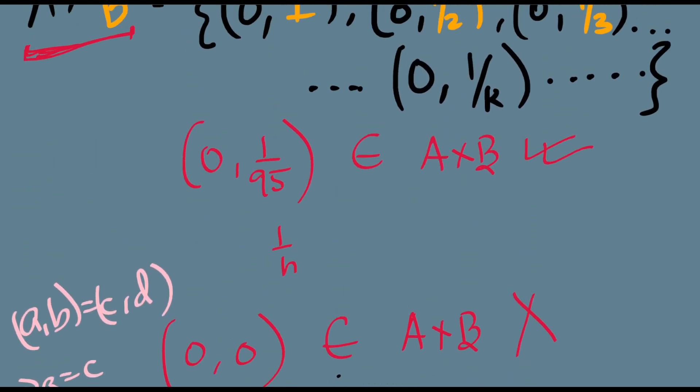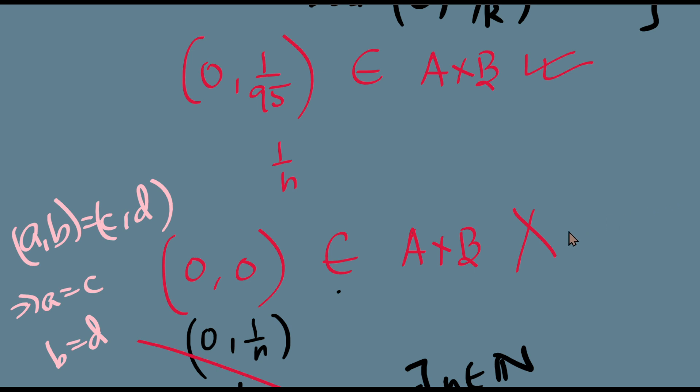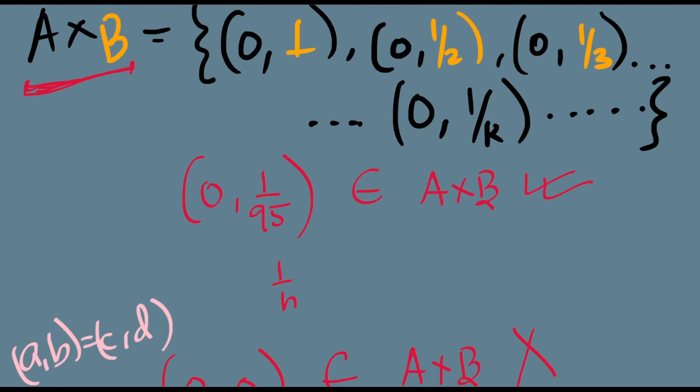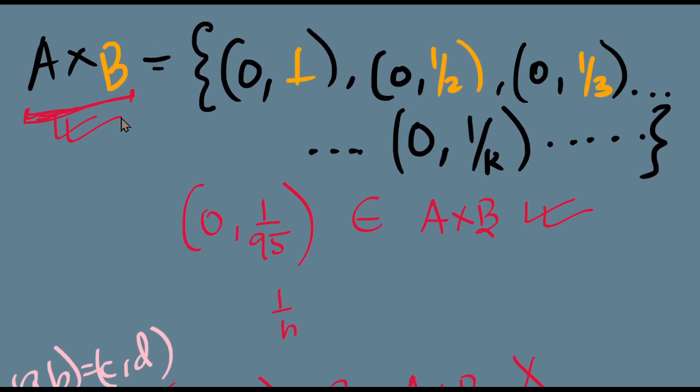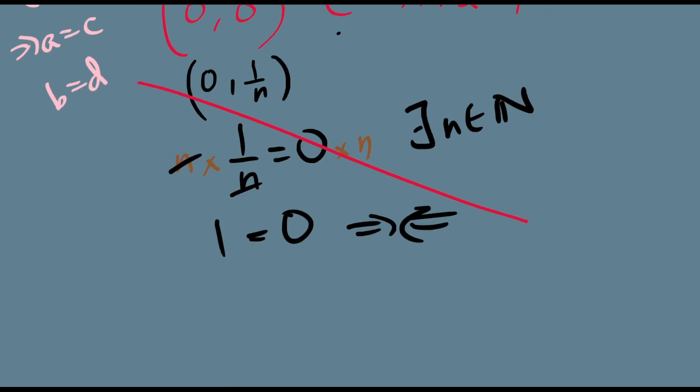So given any element, we can explicitly tell you whether it belongs to A cross B or not, which shows that A cross B is actually a well-defined set, at least in this case. But we know that A cross B is a well-defined set.